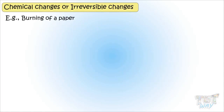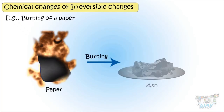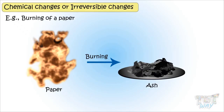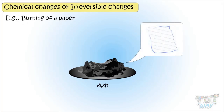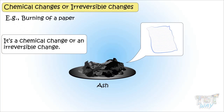Let's see some examples. Burning a paper: if a piece of paper is burnt, it changes to ash — some new type of matter is formed, which looks entirely different from the original matter. This change cannot be reversed, as ash cannot be changed back into paper. So it's a chemical change or an irreversible change.